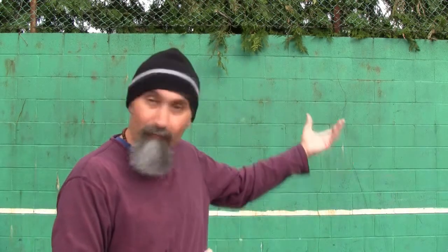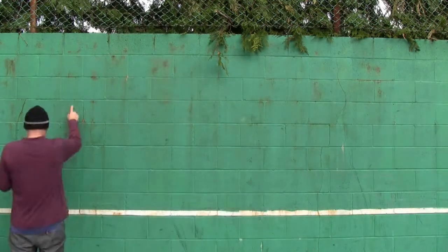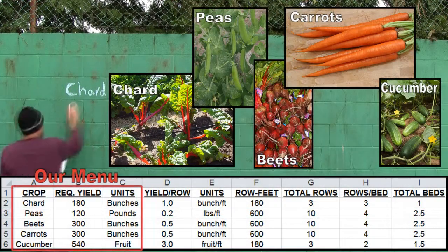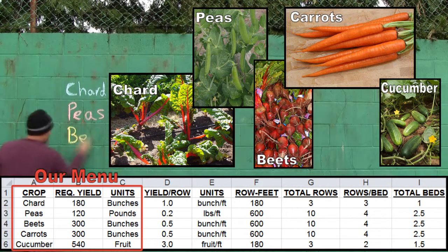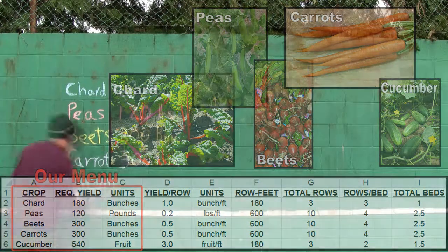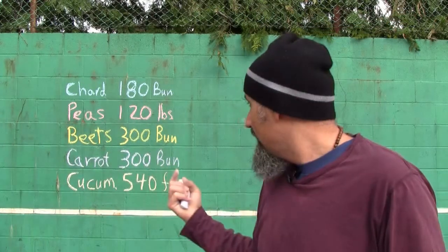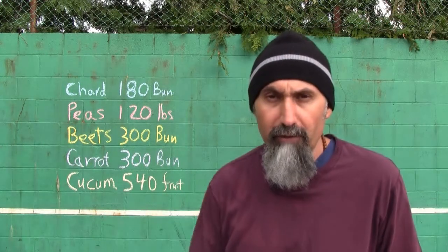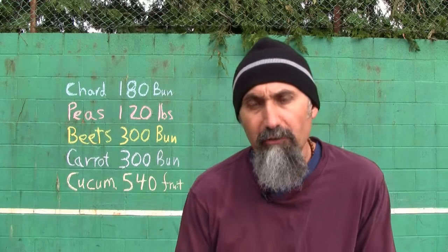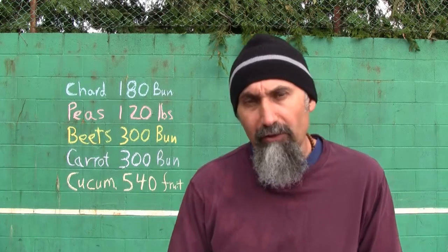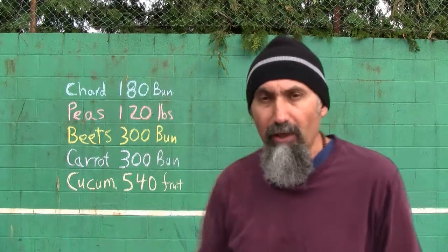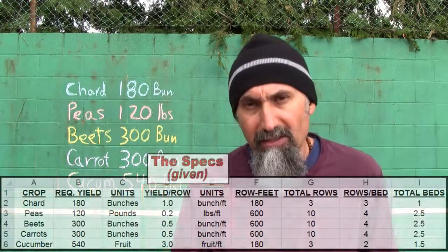We're going to set up our menu and do the calculations to come up with a section we're going to have to plant. Our menu is: 180 bunches of chard, 120 pounds of peas, 300 bunches of beets, 300 bunches of carrots, and 540 cucumbers. To calculate the total row feet needed per item, we look up the specs for each crop.